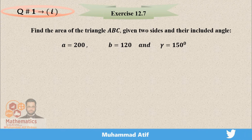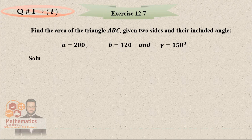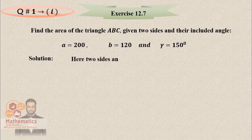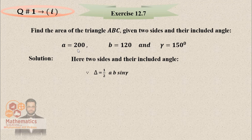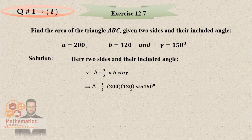Since two sides and their included angle are given, we use: delta = (1/2) AB sin(gamma). Substituting: A = 200, B = 120, and gamma = 150 degrees. Using the calculator, the value comes out to 6,000. Remember to write your answer in square units.